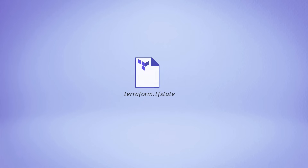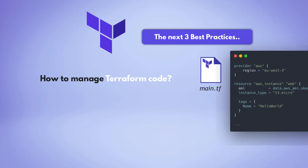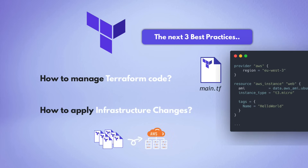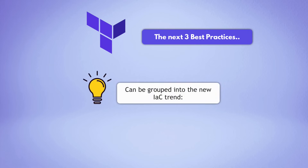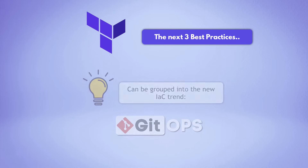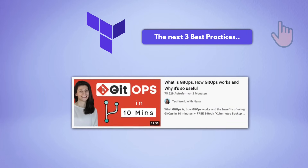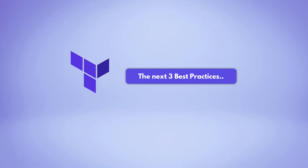Those were the best practices related to Terraform state. The next three best practices are about how to manage the Terraform code itself and how to apply infrastructure changes. These practices can be grouped into a relatively new trend in the infrastructure as code space called GitOps. If you want to know what GitOps is, there is a separate dedicated video on that.